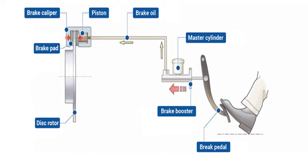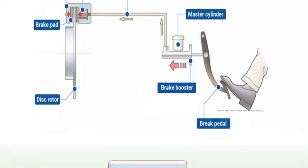There are two types of disc brakes. The opposed piston type disc brake has pistons on both sides of the disc rotor, while the floating type disc brake has a piston on only one side. Floating caliper type disc brakes are also called sliding pin type disc brakes.